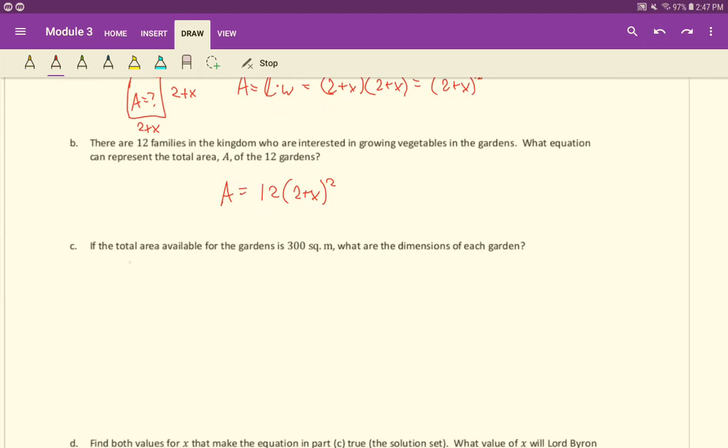Letter C says if the total area available for the gardens is 300 square meters, what are the dimensions of each garden? That's our total area, which we would put in for the area because this is total area for all the gardens, all 12 of those gardens. So we'll say 300 equals 12 times (2+x) quantity squared. Now we want to actually solve here - we want to find what the dimensions for each garden are going to be. That means we need to know what x is. To solve this, we have a couple options.